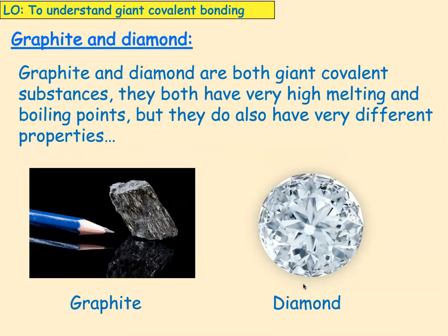Now I'm going to look more closely at graphite and diamond. They're both giant covalent substances and they both have very high melting and boiling points, but they also have very different properties.